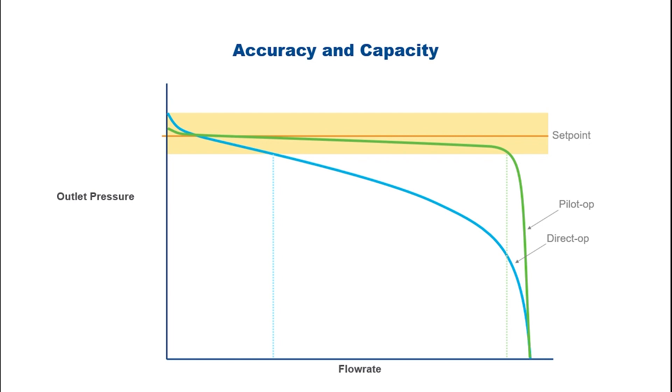Because of their superior accuracy, essentially all a pilot-operated regulator's flow capability is usable, whereas a spring-loaded regulator's useful flow capability is limited due to excessive droop.